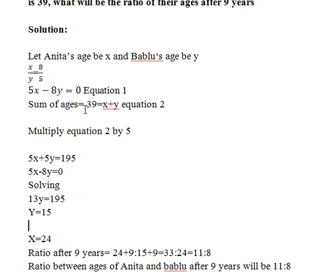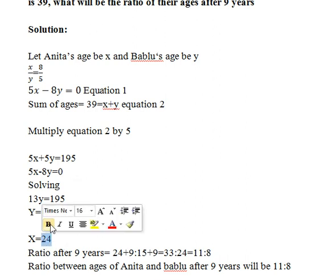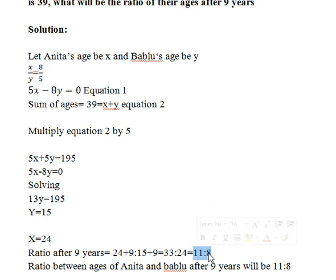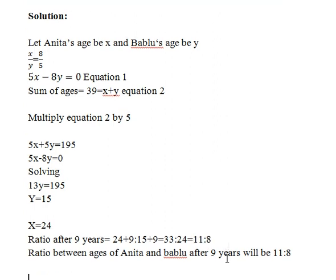The question asks for the ratio of their ages after 9 years. We add 9 to both ages: 24 plus 9 equals 33 for Anita, and 15 plus 9 equals 24 for Bablu. When simplified, the ratio 33 to 24 comes down to 11 is to 8, which is the ratio between the ages of Anita and Bablu after 9 years.